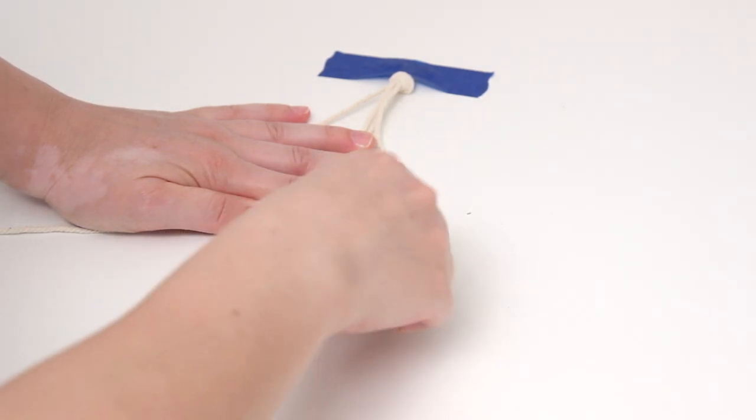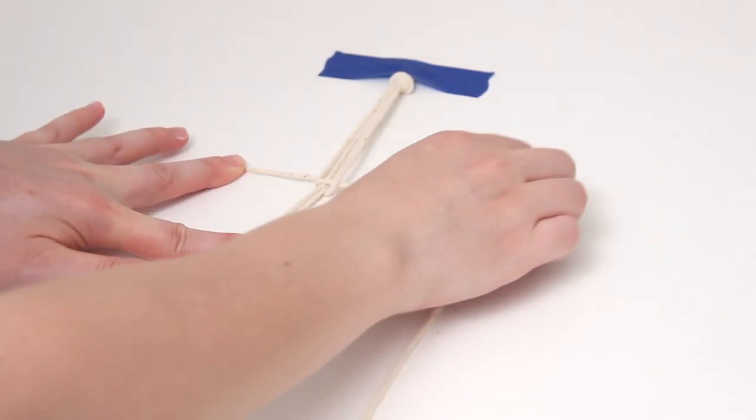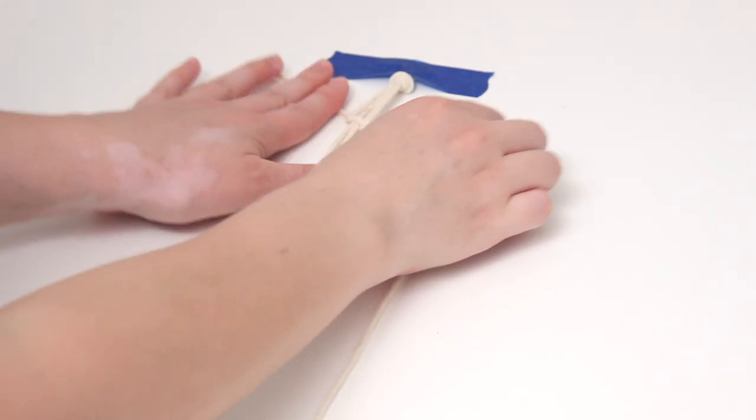And then you're going to take your two end pieces and pull them, keeping your center pieces tight. And then just pull those side pieces all the way up to the top. And that's the first half of your square knot.